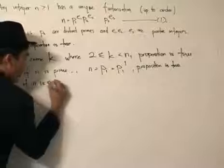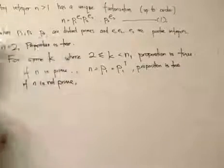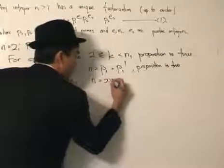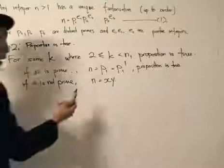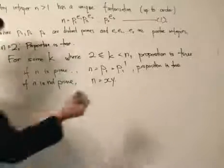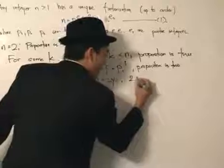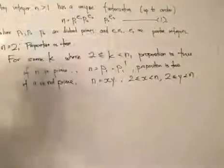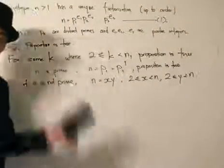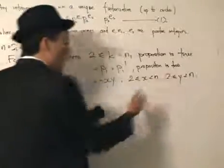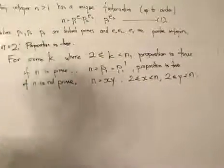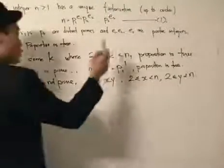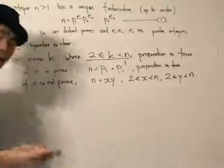If n is not prime, meaning we can factor n, we write n equals x times y. Since n is a certain number, when we divide it, x and y will each be less than n. So now we can use the induction hypothesis and apply it to x and y — assuming again that the induction hypothesis is true.